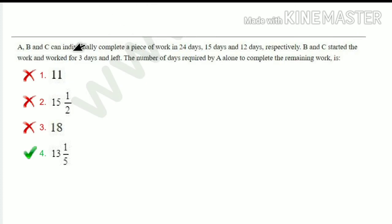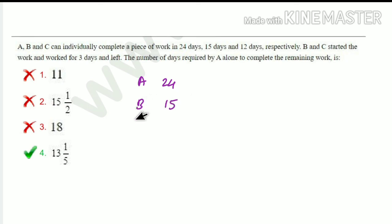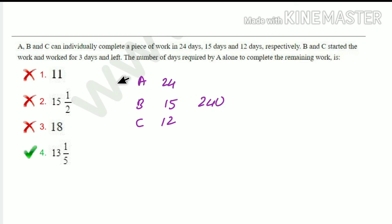Next problem: A, B, C can individually complete a piece of work in 24 days, 15 days, and 12 days respectively. B and C started the work and worked for 3 days, then left. Find the number of days required by A alone to complete the remaining work. A works in 24, B in 15, C in 12 — setting up the calculation for remaining work after B and C work 3 days.